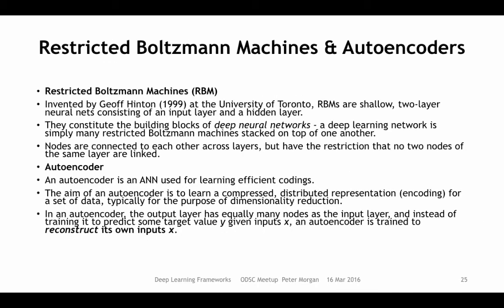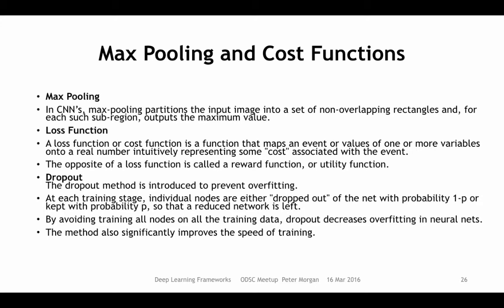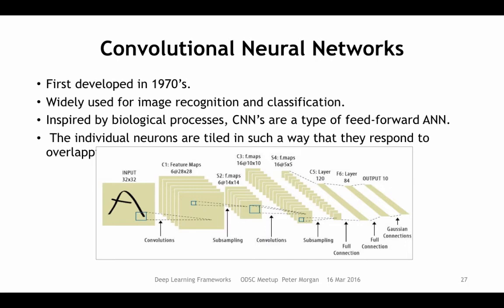Restricted Boltzmann machines are simply two layers combined in a particular way — when stacked, they improved accuracies by five to ten percent, which is why they're important. Stack a bunch of these layers together and that's your neural network. Autoencoders are when you make the input and output layer the same. There's also dropout and loss functions — you can read about those in your own time.